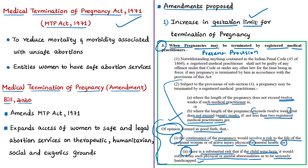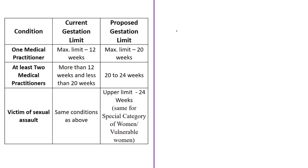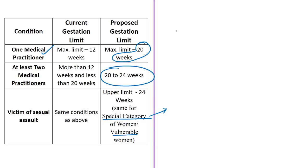The proposed amendment aims to increase the gestation limit to 20 weeks if one medical practitioner is involved, and from 20 to 24 weeks if at least two medical practitioners are involved. The proposed amendment also recognizes a vulnerable category among pregnant women — including survivors of rape, victims of incest or sexual assault, differently-abled women, and minors. For these vulnerable women, the upper gestation limit is enhanced from 20 weeks to 24 weeks.